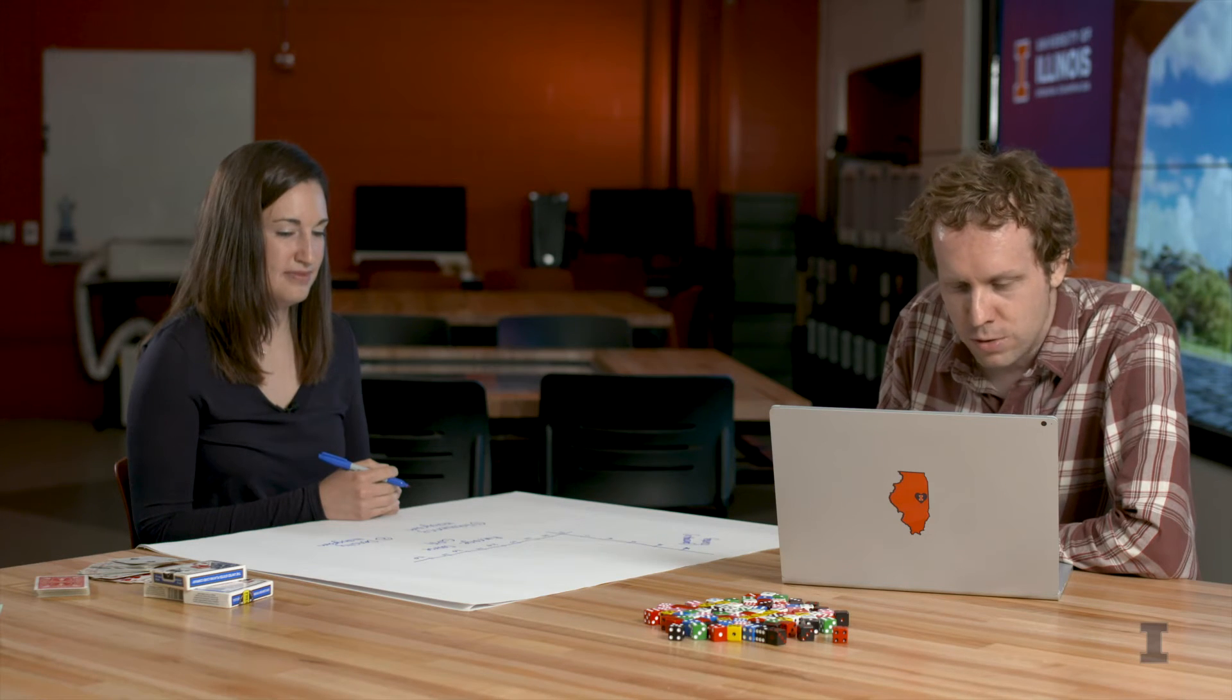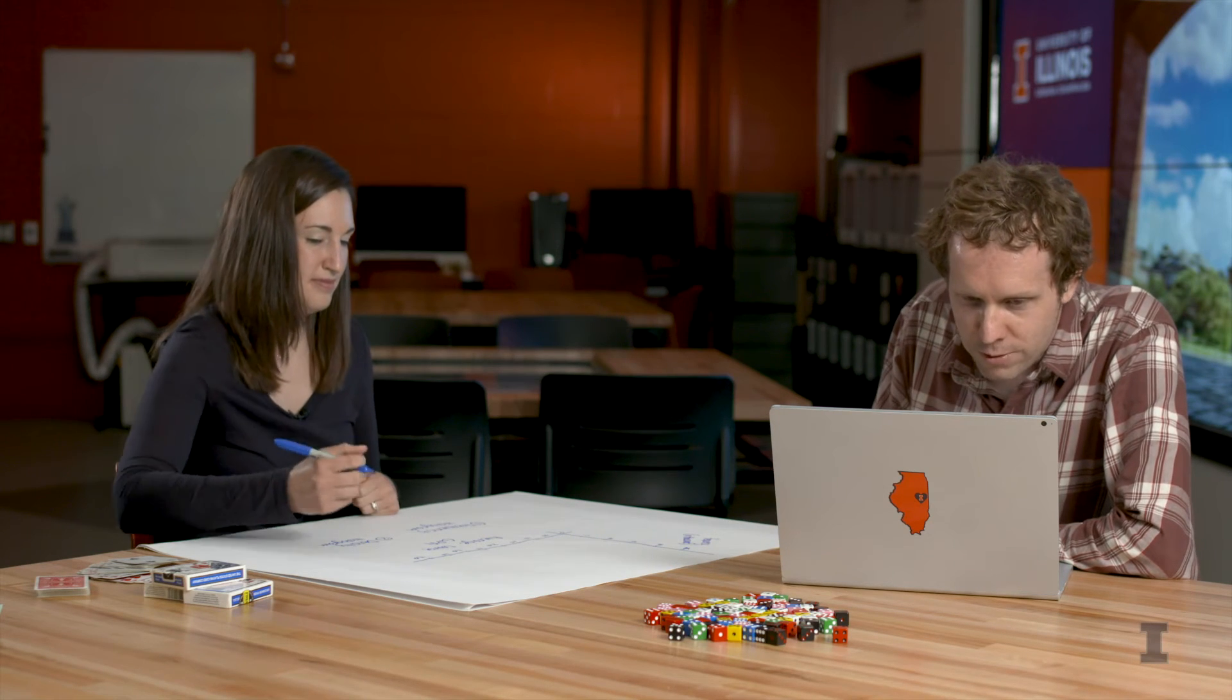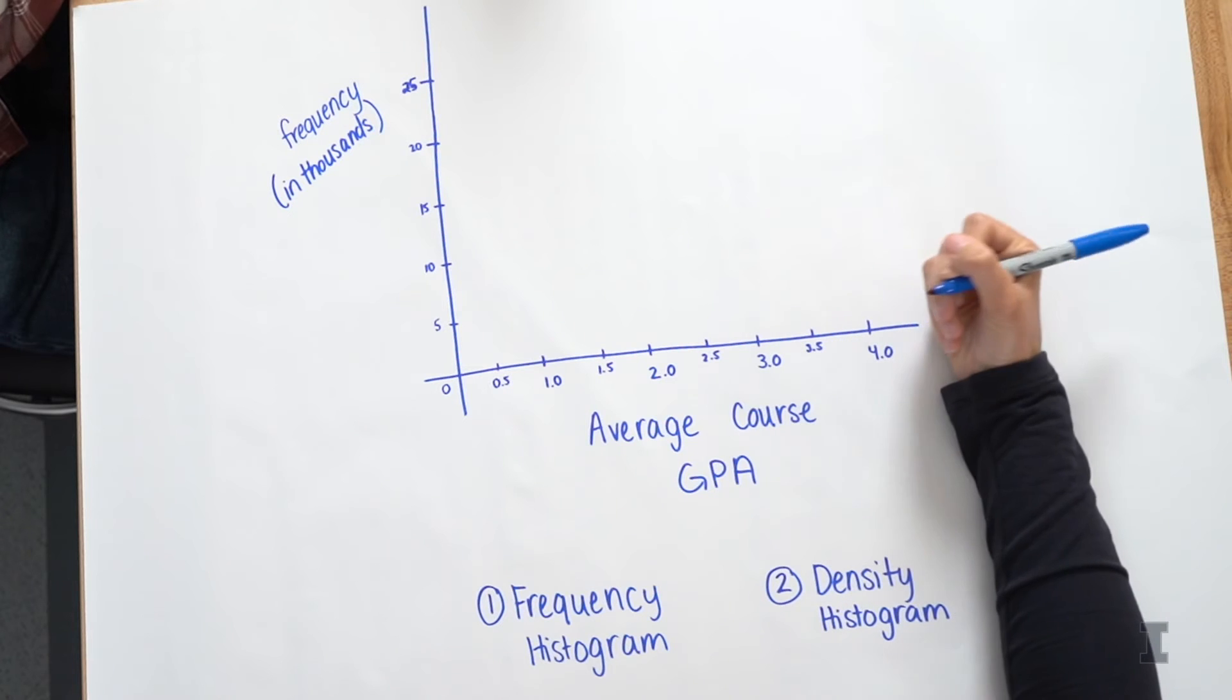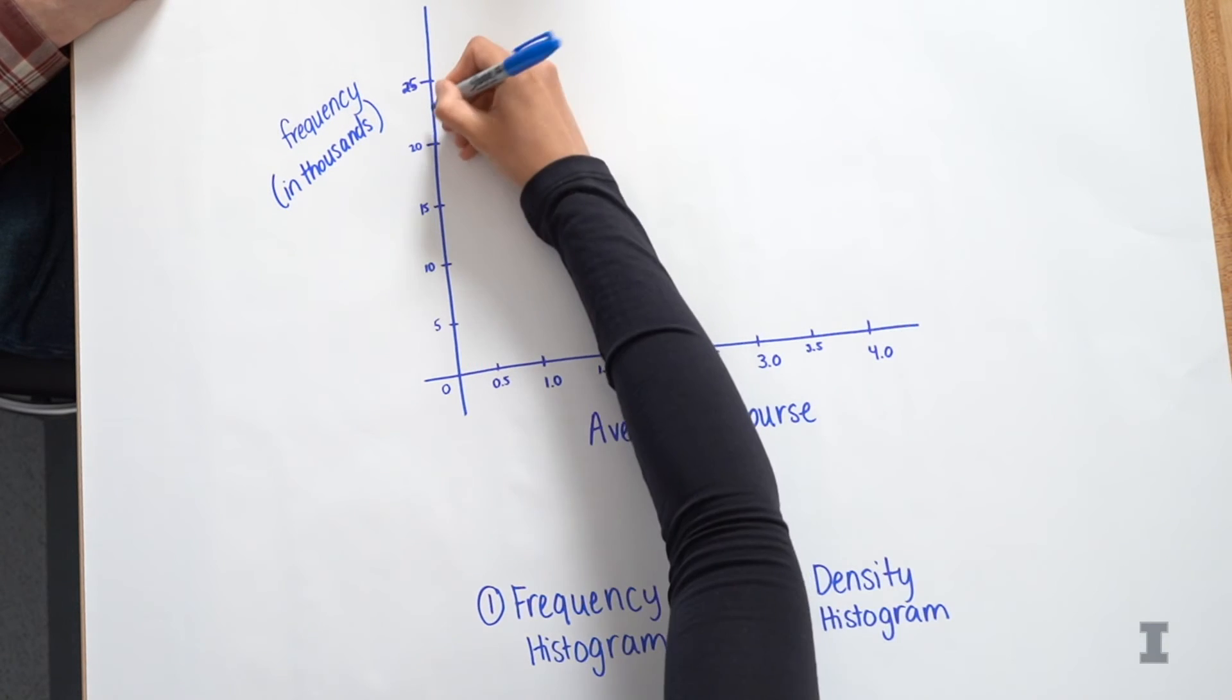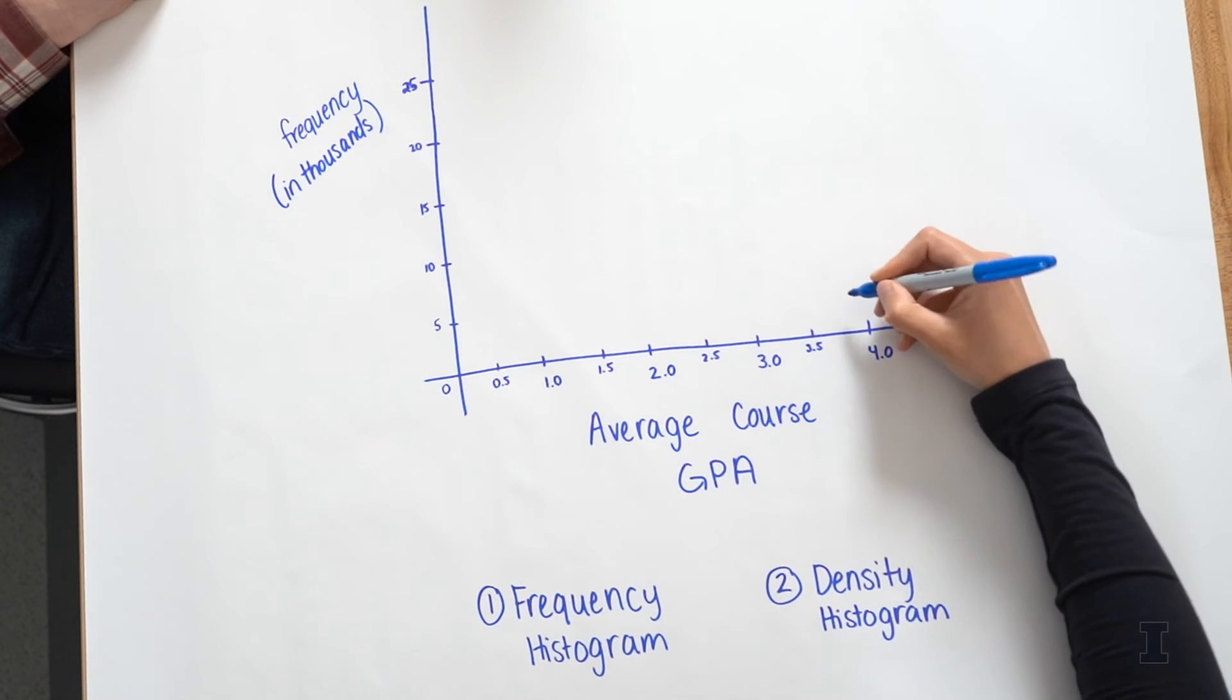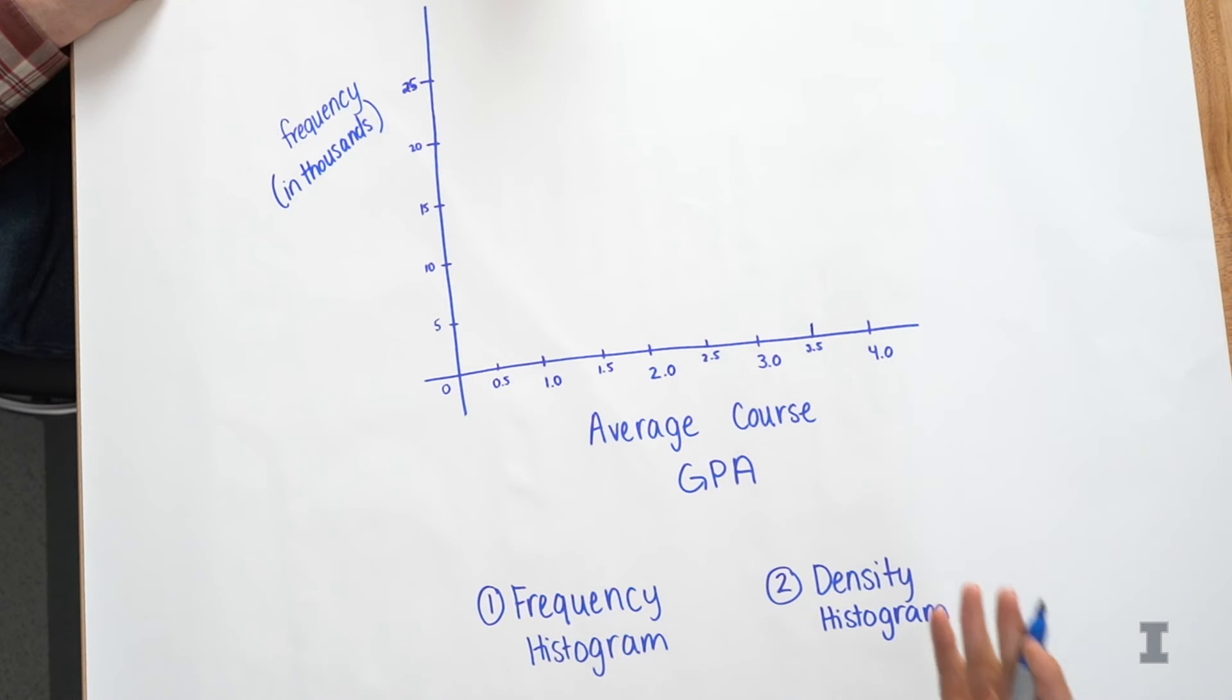And I'm looking at some data. And I see the bin of everyone who every course has GPA, average course GPA between 3.5 and 4. There are 22,275 such courses. So that's right about like kind of right in between the 20 and 25,000 mark.